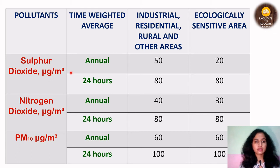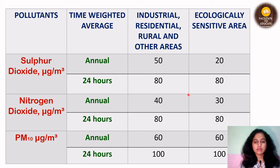For sulfur dioxide, for annual measurement in industrial, residential, and rural areas, the standard is 50 microgram per meter cube. For ecologically sensitive areas, it is 20. For 24 hours, it is 80 for both area types. For nitrogen dioxide, it is 40 for industrial, residential, and rural areas, and 80 for 24-hourly measurement. So for sulfur dioxide and nitrogen dioxide, the 24-hourly standard is the same at 80, with a difference of 10 in annual values.